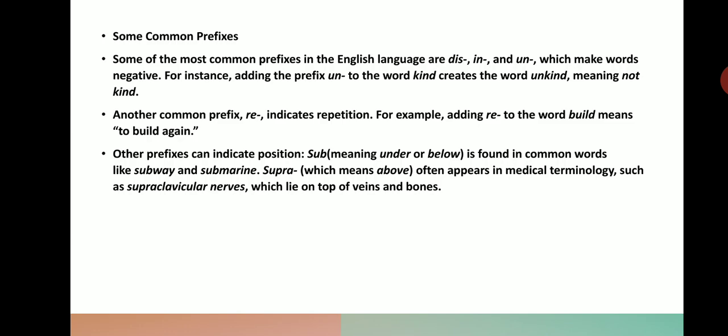Some of the most common prefixes in English are dis-, in-, and un-, which make words negative. For instance, adding the prefix un- to the word 'kind' creates the word 'unkind.' Similarly, we added un- to the word 'happy' to get 'unhappy.' The most common negative prefixes are dis-, in-, and un-.